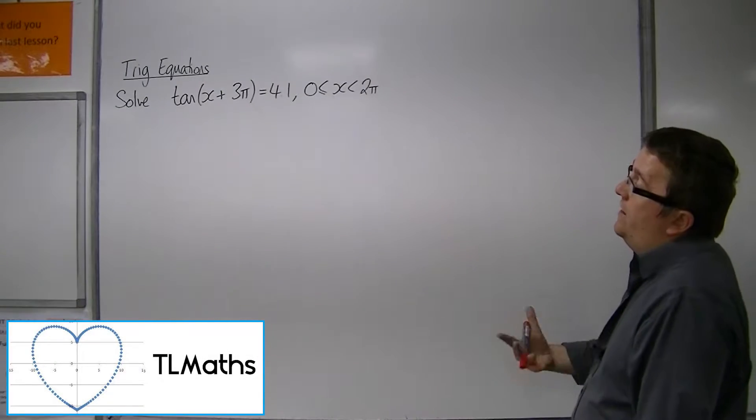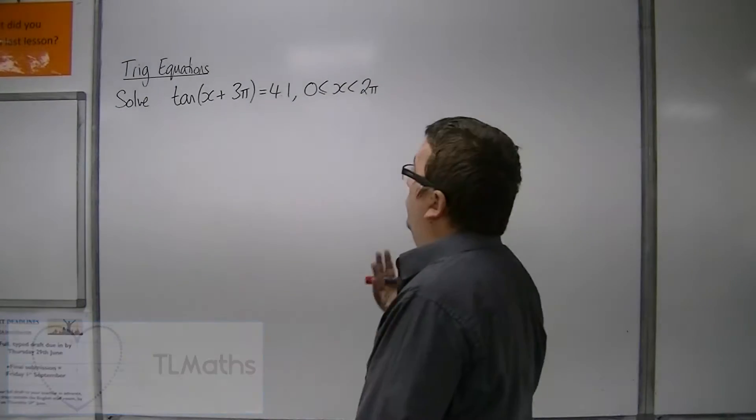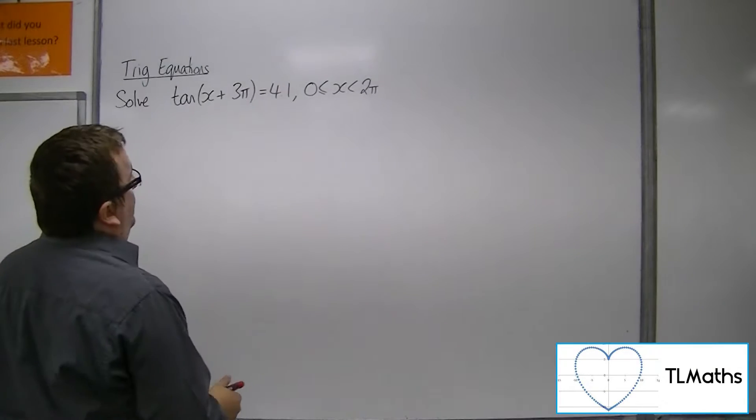So let's say I want to solve tan(x + 3π) = 4.1 between 0 and 2π radians.